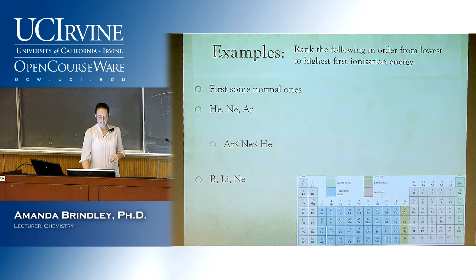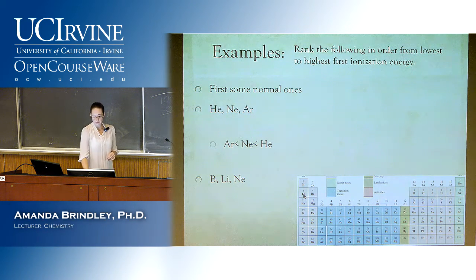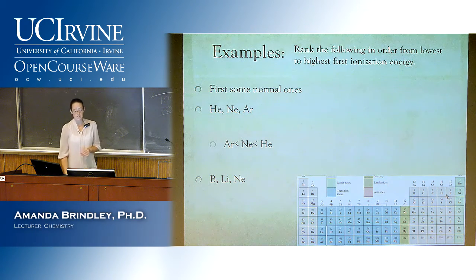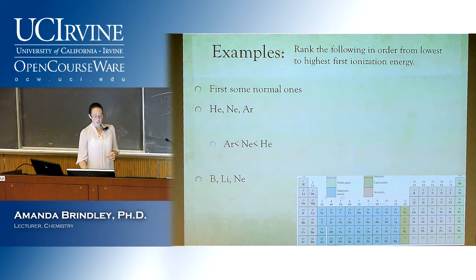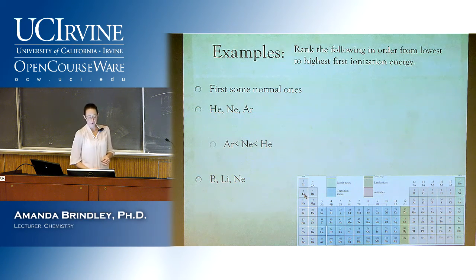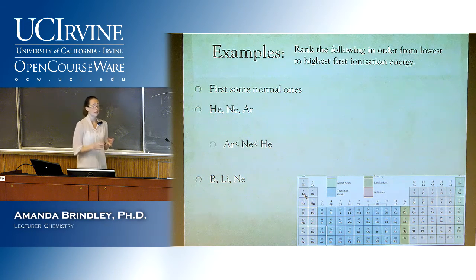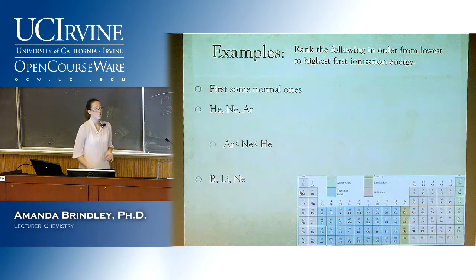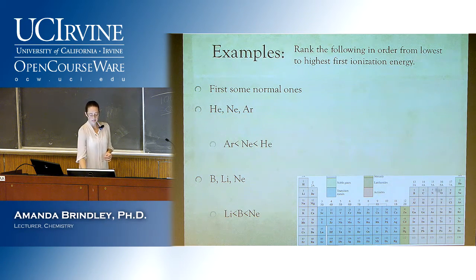Next: boron, lithium, and beryllium — all in the same row, going straight across. The trend going across has to do with effective nuclear charge. Lithium has the smallest effective nuclear charge, so it doesn't take much energy to pull off its electrons — its ionization energy is very low. As we move right, effective nuclear charge increases, so ionization energy increases. The ordering from lowest to highest is lithium, then boron, then beryllium in terms of the trend.